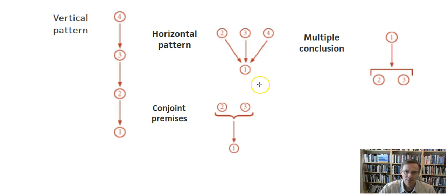Now, Hurley goes on to point out that sometimes the premises will be conjoint. If the premises are conjoint, it just means that this premise and this premise all need to be taken together. That's what is indicated by the brackets, to support the conclusion.